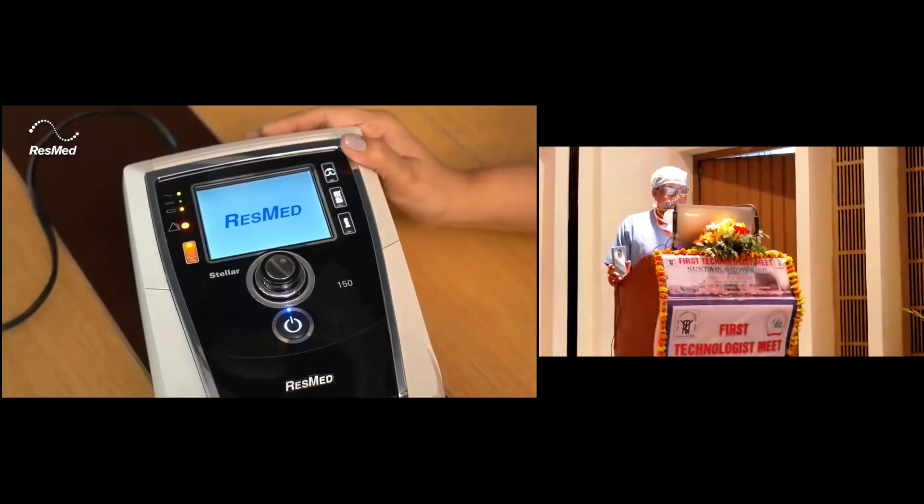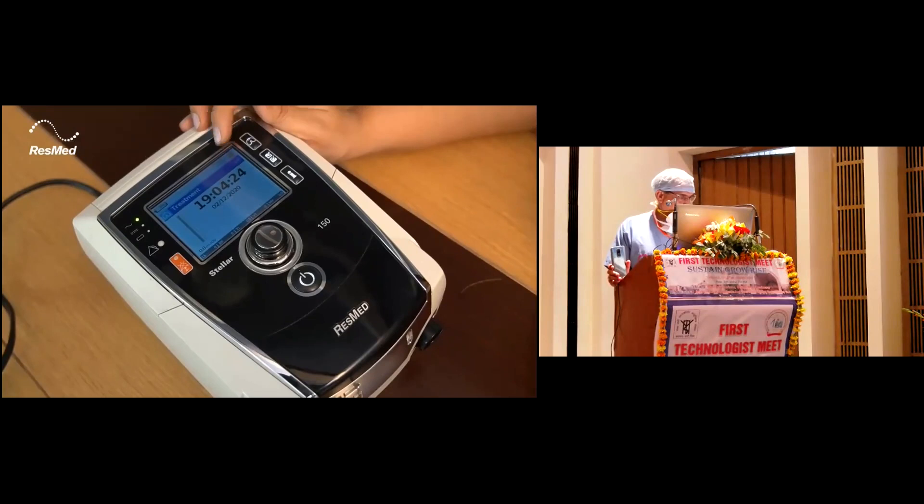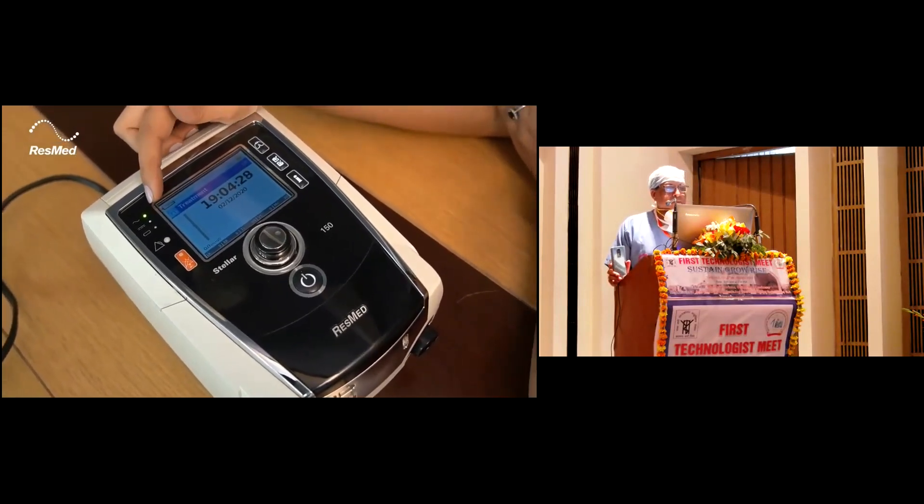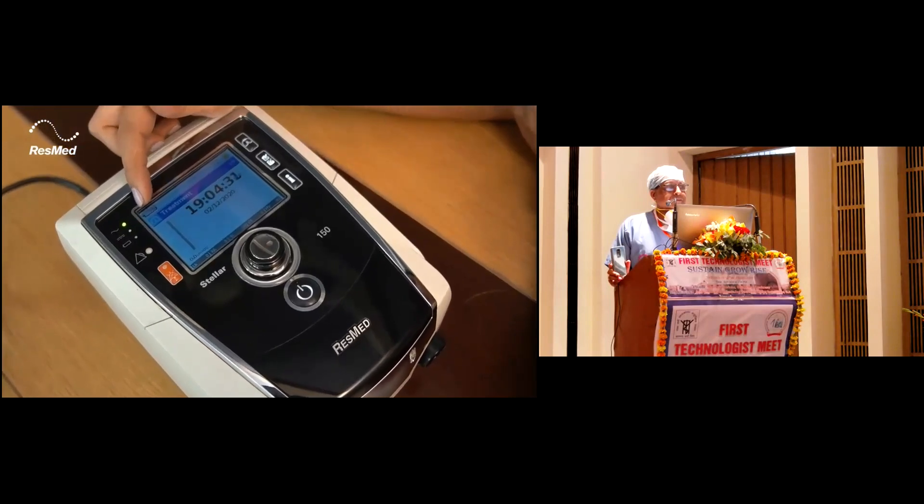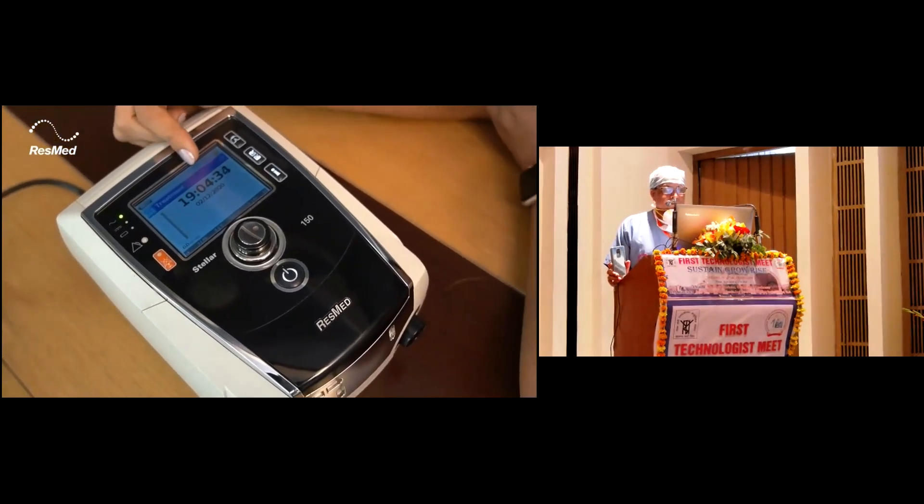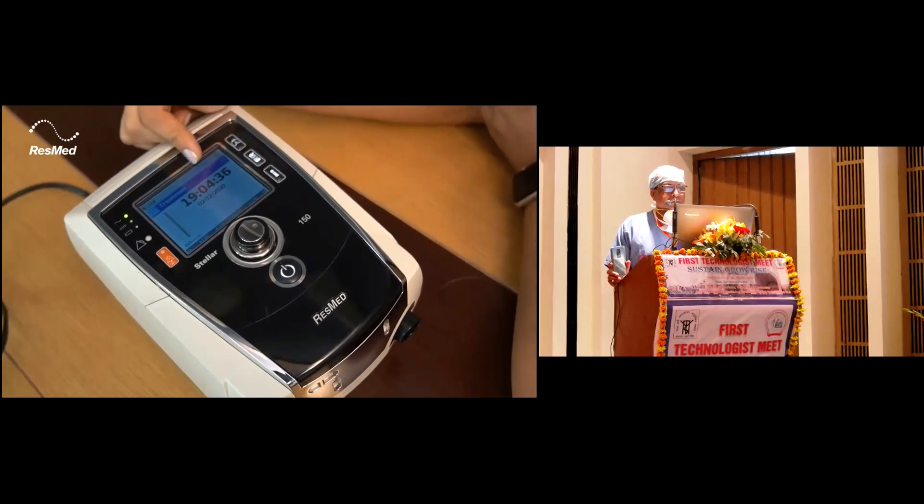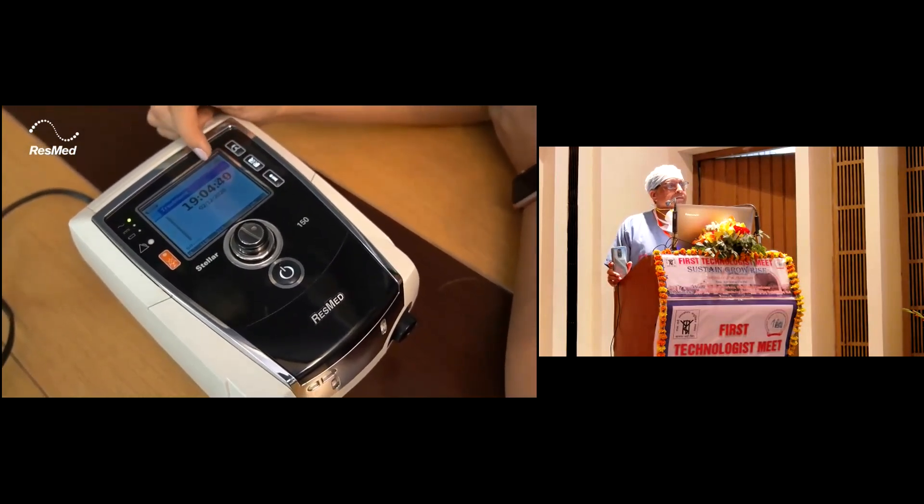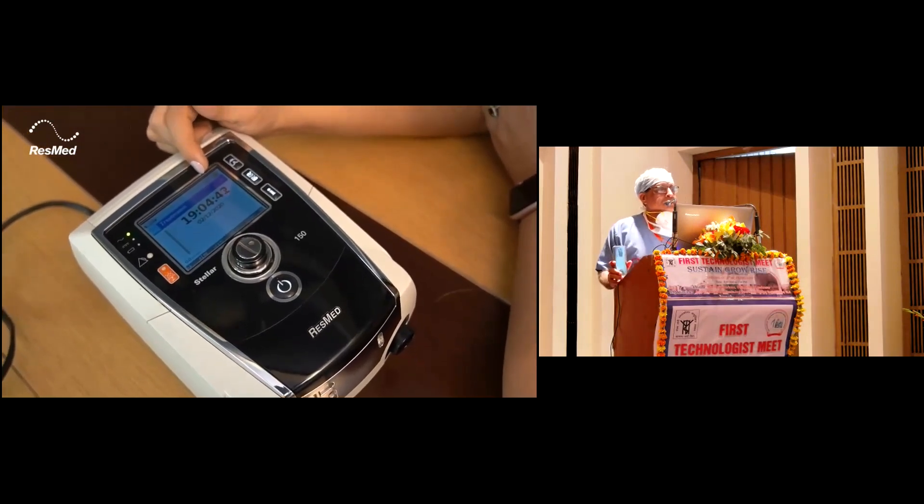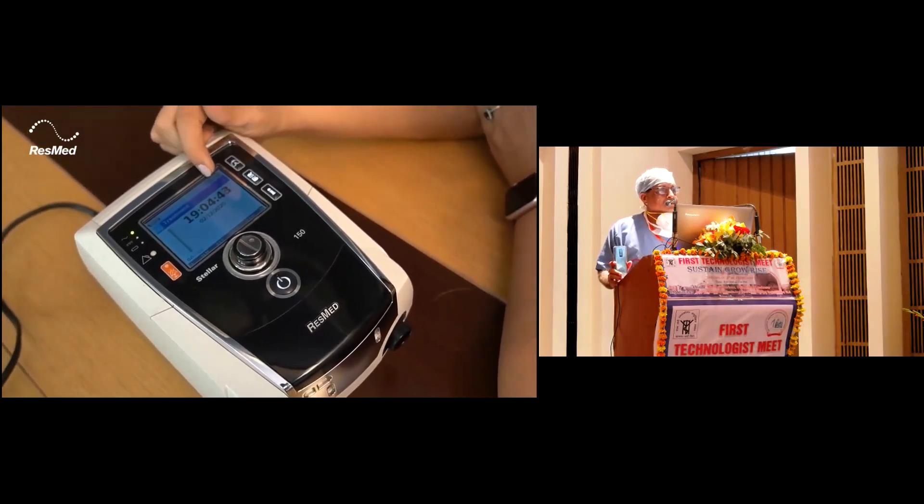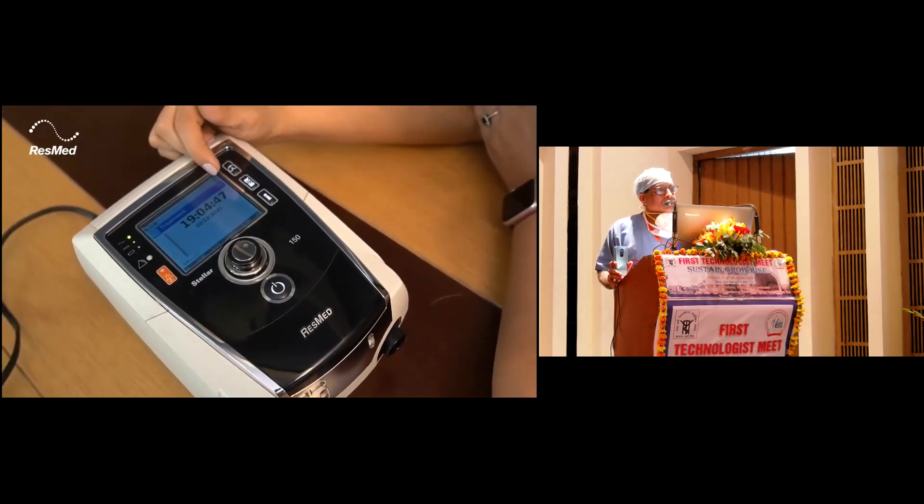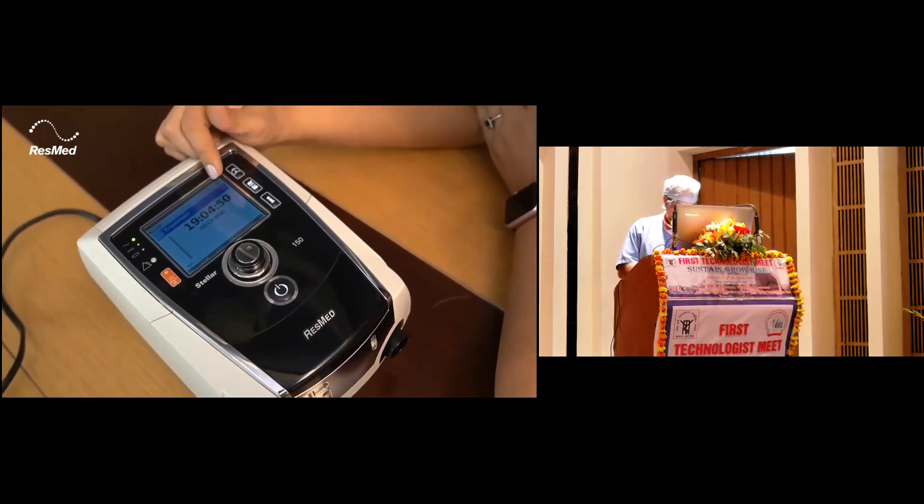Once we turn on the Stellar, the display lights up. In the display, the left upper corner shows the battery indicator. Post which you have information on the topmost bar, which will be seen once we start ventilating the patient. The patient right now is on program one on iVAPS mode, and here it is clinically locked.